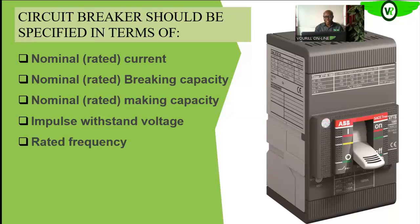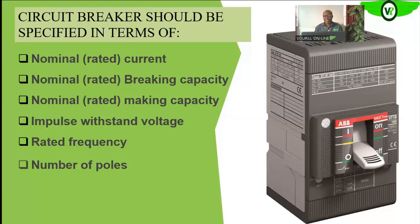Then there is the rated frequency — the operating frequency of that circuit breaker, whether it is 50 Hz or 60 Hz — which you will see clearly on the nameplate. And of course, the number of poles. In a single-phase distribution system you will need a four-pole breaker: line one, line two, line three, and neutral. But if you are supplying a three-phase load directly, or in a medium or high voltage environment, a three-pole circuit breaker will be needed.